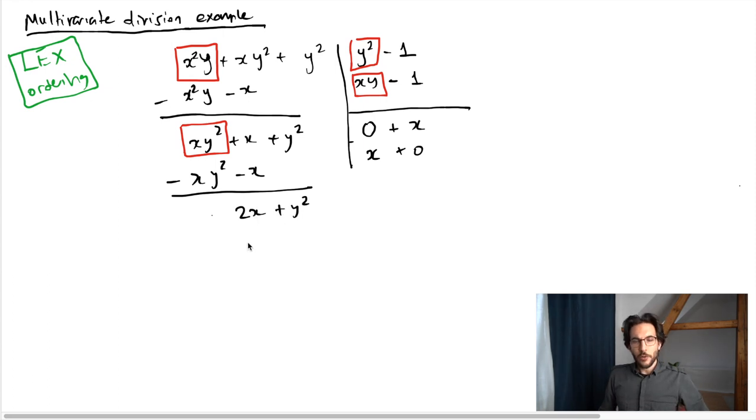Here is the first time that something is different from the univariate polynomial division in a significant way. The leading term 2x is not divisible by either y squared or x y. In the univariate case, this was the time to stop, but not this time around. What we do is that we open a remainders column. I carry 2x to the remainders column. The price of putting 2x here is to subtract it here, and I am left with y squared.